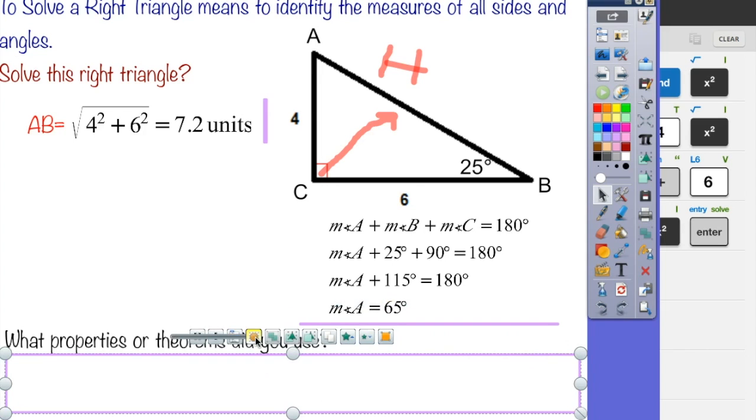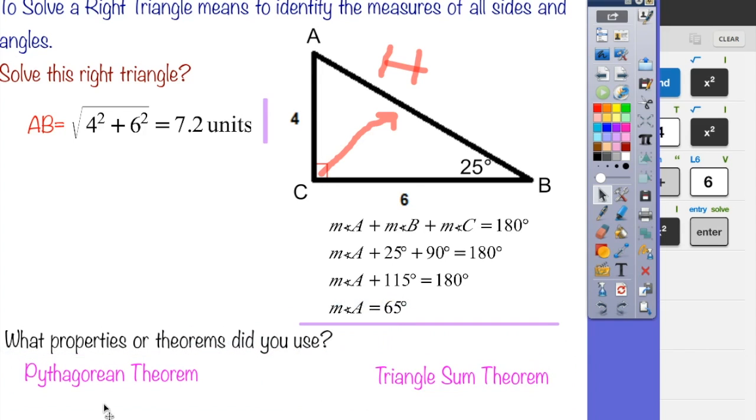Okay, so in this case we use the Pythagorean theorem to solve for a missing side and the triangle sum theorem to find the missing angle. So this is review from previous sections that we worked on.